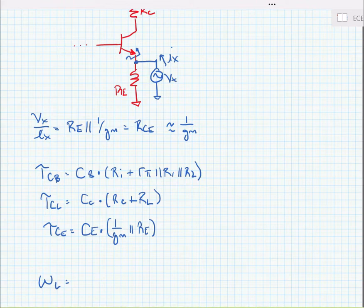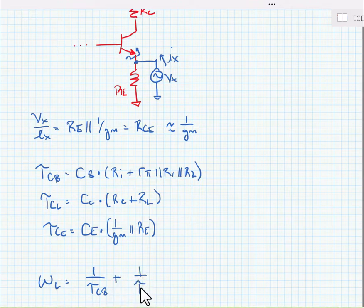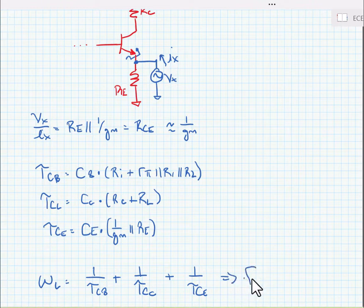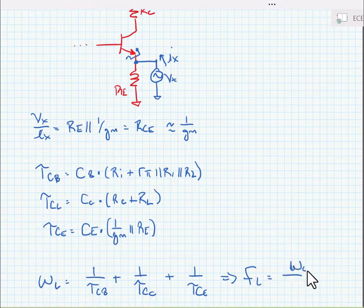And now if we want to find the low frequency, we can check our roll-off. It's 1 over tau CB plus 1 over tau CC plus 1 over tau CE. And of course, if we wanted to convert this to hertz, fL is equal to, oh sorry, omega L over 2 pi.